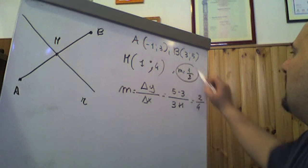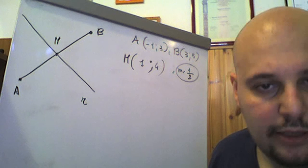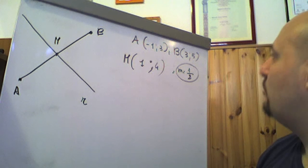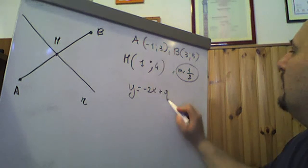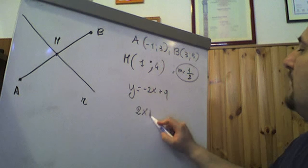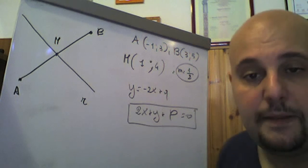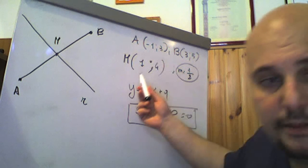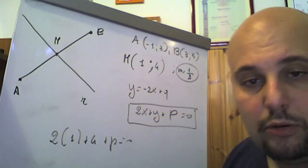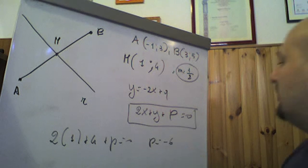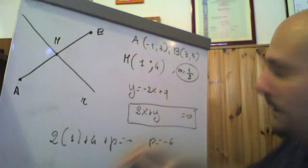La perpendicolare, la retta ortogonale al segmento AB, avrà coefficiente angolare pari all'antireciproco di 1/2, quindi -2. Sarà y = -2x + Q, ovvero 2x + y + P = 0, che rappresenta l'equazione del fascio improprio. Imponiamo il passaggio per il punto medio M(1, 4): 2·1 + 4 + P = 0, cioè 6 + P = 0, quindi P = -6. L'asse del segmento AB avrà equazione 2x + y - 6 = 0.